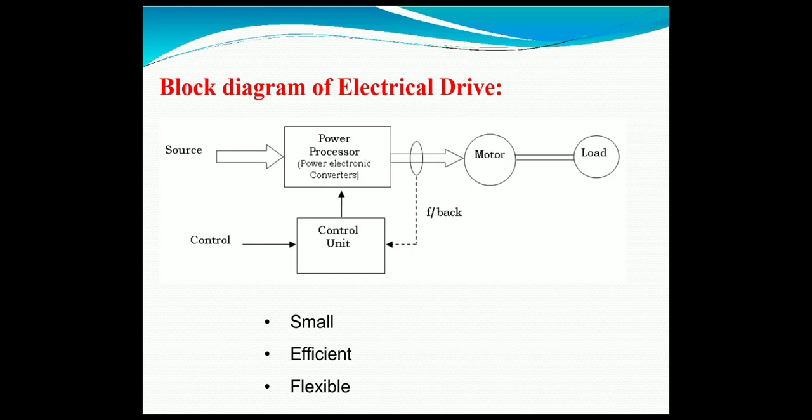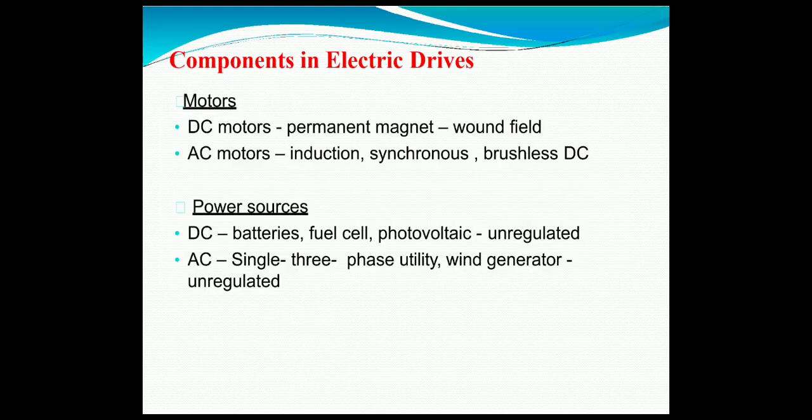Here is a block diagram of an electrical drive. In this block diagram, we can see that the load is driven with the help of a motor — it may be a DC motor or an AC motor. The output of the power processor, or power modulator, is fed into the motor. Feedback is given and sensed with the help of a control unit, and the supply source may be AC or DC.